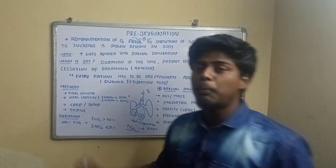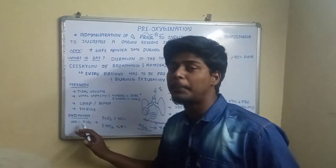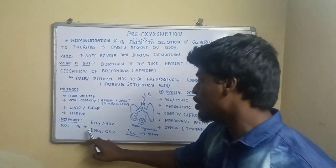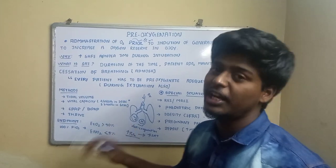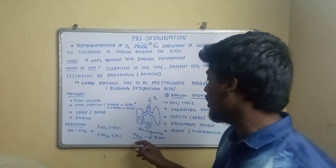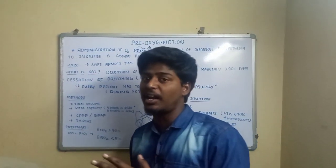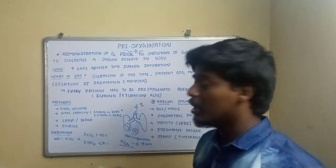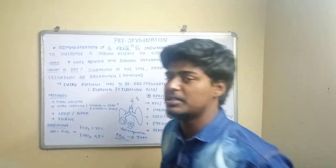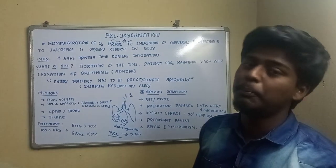What is the endpoint of pre-oxygenation? We administer 100% FiO2, and using a gas monitoring system, the endpoint is reached when the end-tidal oxygen (ETO2) value is more than 90% — reflecting the increased alveolar partial pressure of oxygen — and the nitrogen value is less than 5%.